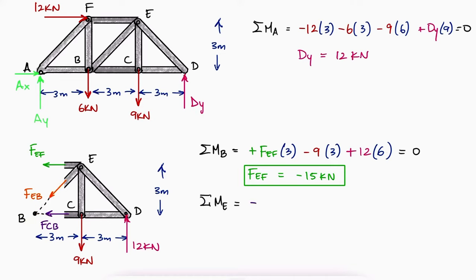Similarly, a sum of moments about E would allow us to solve for FCB, since the lines of action of FEF, FEB and the 9kN force would pass through E.